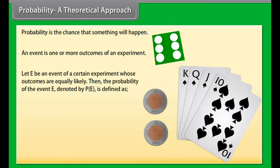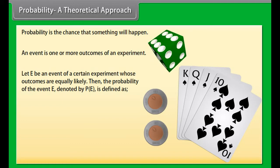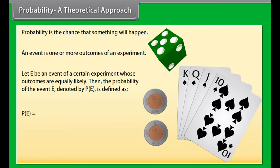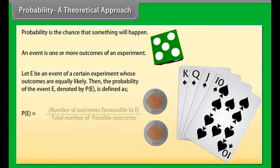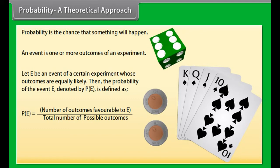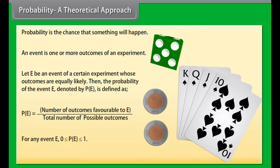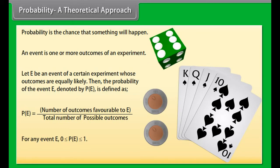Probability: a theoretical approach. Probability is the chance that something will happen. An event is one or more outcomes of an experiment. Let E be an event of a certain experiment whose outcomes are equally likely. Then the probability of event E is defined as: Probability of event E equals number of outcomes favorable to E divided by total number of possible outcomes.